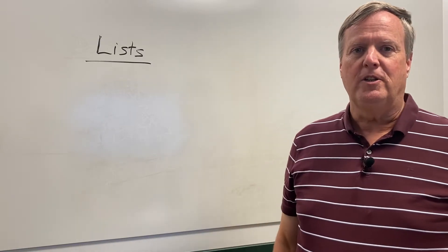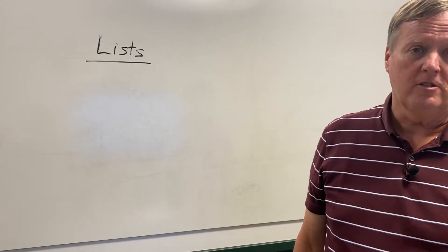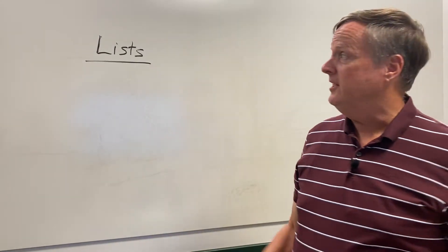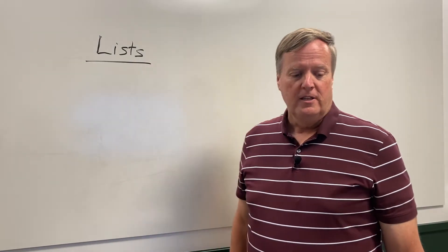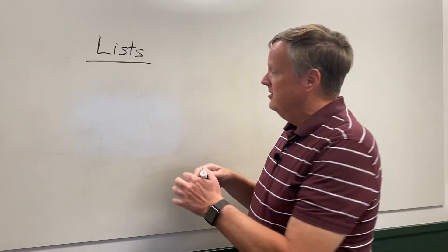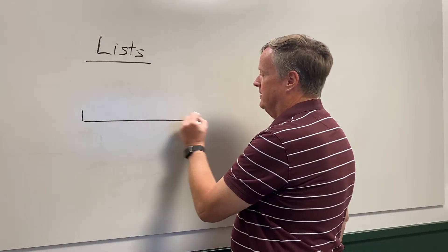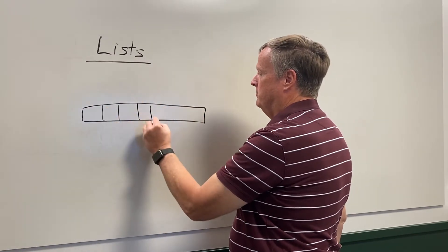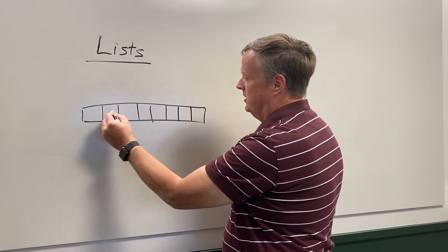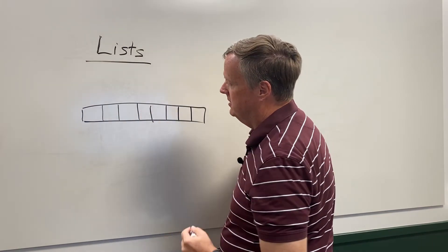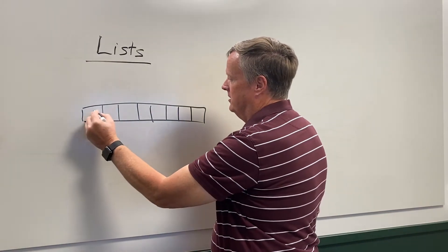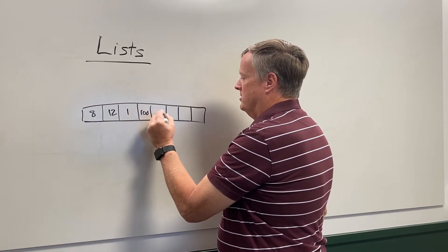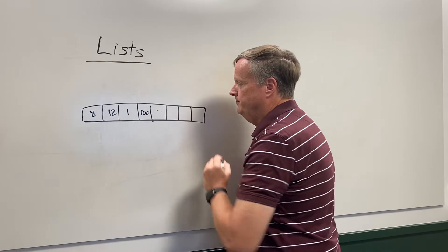In this video we're talking about one of the data structures that you will need to know to do well in your technical interviews, and that is the list. A list is simply a linear collection of items. We often draw it on the board like this where each one of these blocks contains an item — for example, numbers like 8, 12, 1, 100, and so on.